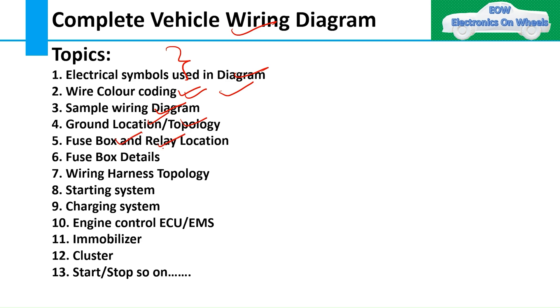Of course, you should be aware of the fuse box and relay locations in the vehicle so diagnosing will be very easy. Then fuse box details - we'll see how much fuse is used for which particular function. Then wiring harness topology - we'll understand how many wiring harnesses are used completely in that particular vehicle. We'll take one example of a pickup truck or LCV. The example we take, you can relate to your day-to-day activity so it will be helpful.